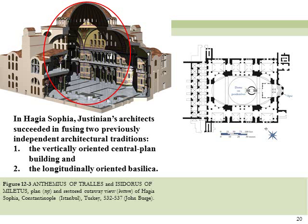They fused the vertically oriented central plan building and the longitudinally oriented basilica. Hagia Sophia is, in essence, a domed basilica—a uniquely successful conclusion to several centuries of experimentation in Christian church architecture. However, the thrust of the pendentive construction at Hagia Sophia made external buttresses necessary, as well as huge internal northern and southern wall piers and eastern and western half domes. The semi-domes' thrust descends, in turn, into still smaller half domes surmounting columned exedrae that give a curving flow to the design.